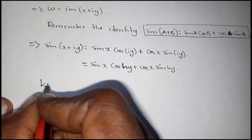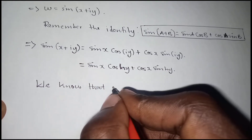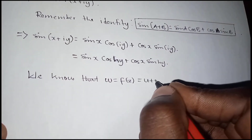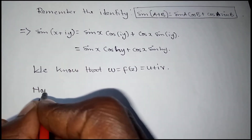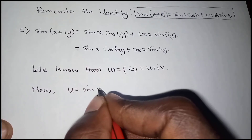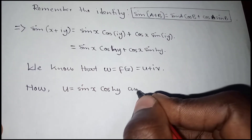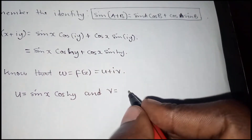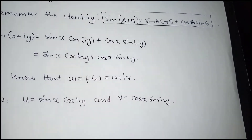We know that the function w is the same as f(z), which is equivalent to u plus iv. So the function w is given in terms of u plus iv, where u is the real part of the function and v is the imaginary part. So u equals sine x cosh y, and v equals cos x sinh y.